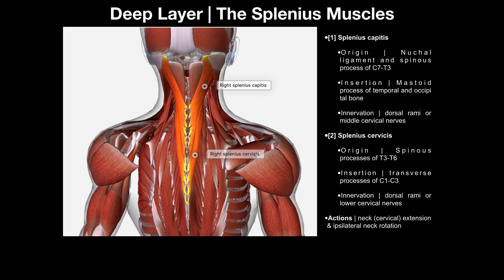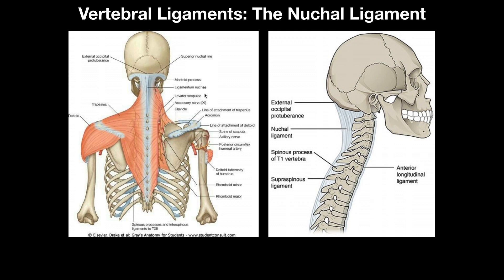Here's a lateral view of the skull and the vertebral column. We see this large ligament that seems to come down from the external occipital protuberance, goes along the base of the occiput, and seems to connect the spinous processes from C1 down to C7. Of course, C1 doesn't have a spinous process — it's called the posterior tubercle — but for our purposes, it's the spinous processes down to C7. This large sheet-like ligament is the nuchal ligament, also called ligamentum nuchae, which is what it's labeled right here.